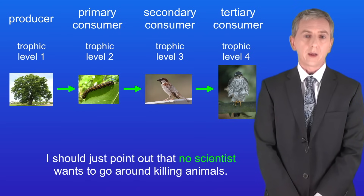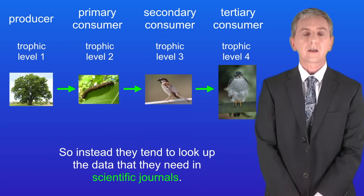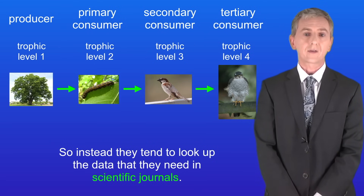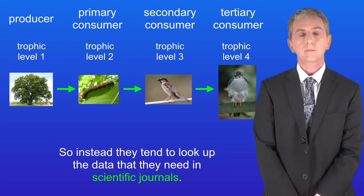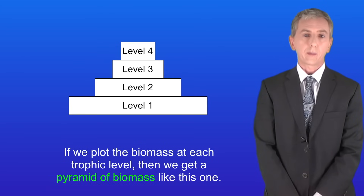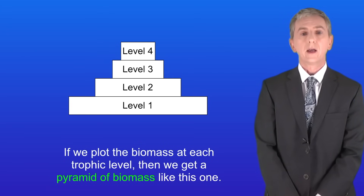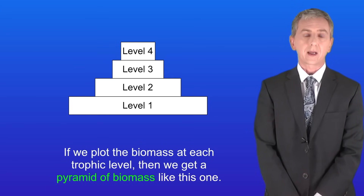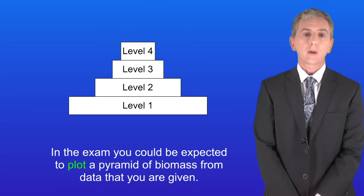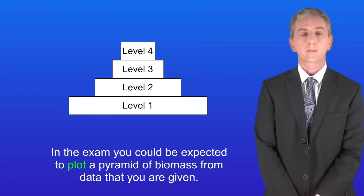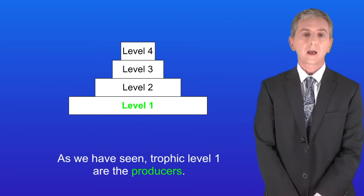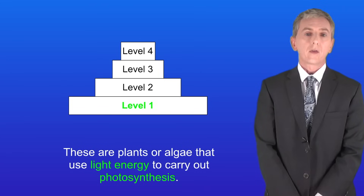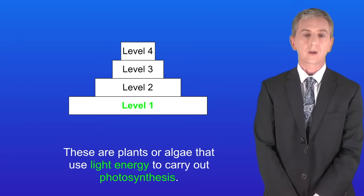No scientist wants to go around killing animals, so instead they tend to look up the data they need in scientific journals. Now if we plot the biomass at each trophic level we get a pyramid of biomass like this one. In the exam you could be expected to plot a pyramid of biomass from data you're given. As we've seen, trophic level one are the producers — plants or algae that use light energy to carry out photosynthesis.